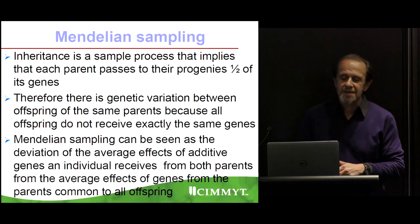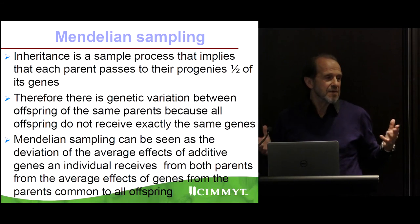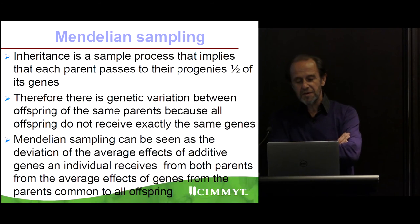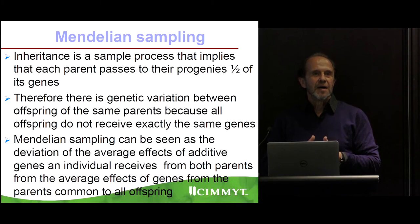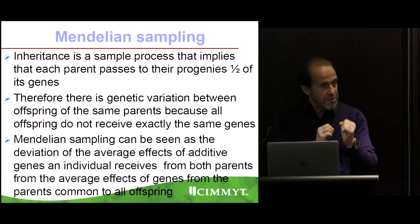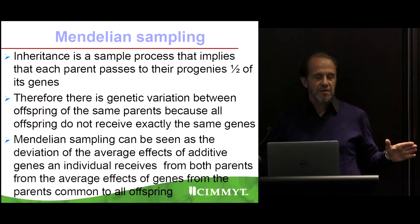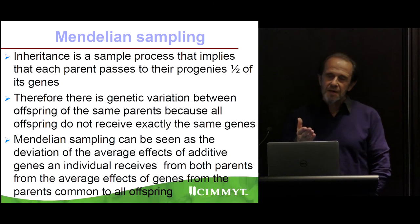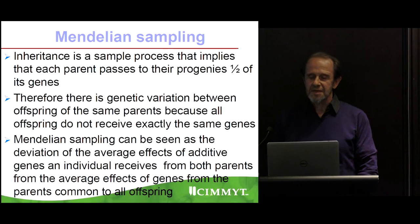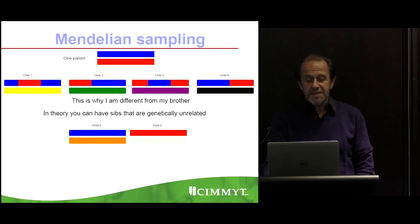The Mendelian sampling is a sampling process whereby each parent passes one half of their genes, but in each meiosis not exactly the same material will pass. With Mendelian sampling, in the traditional approach you need to put the seed in the field and wait six months to distinguish between brothers and sisters. With markers, you can account for this Mendelian sampling without having to go to the field.